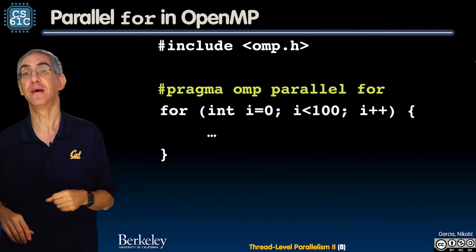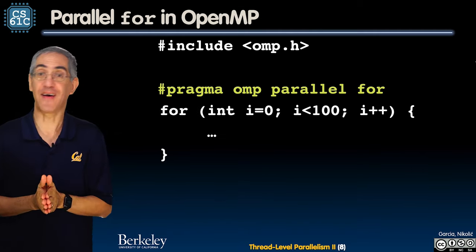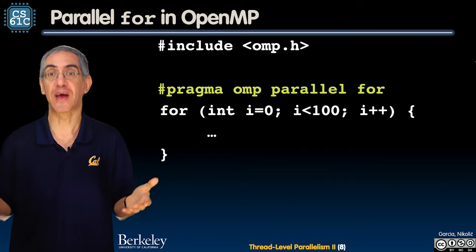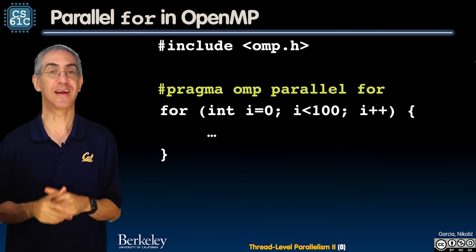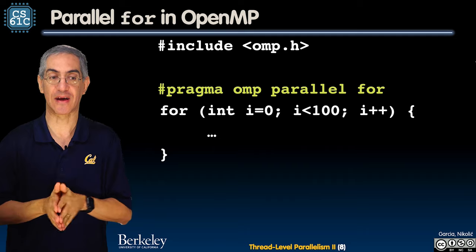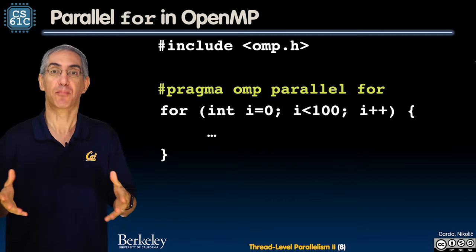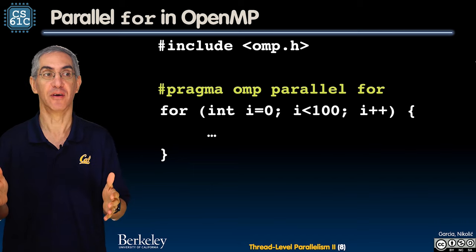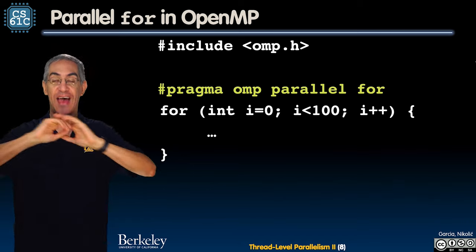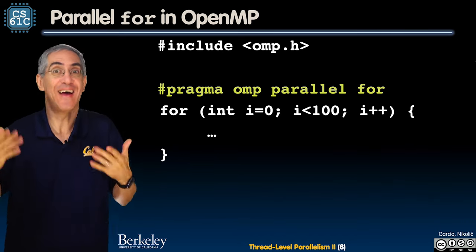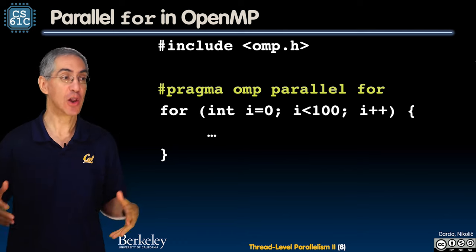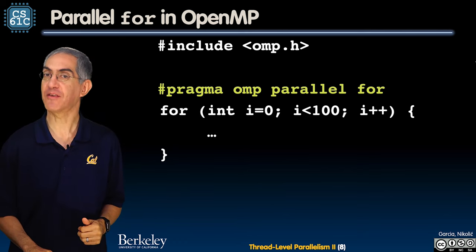How to do this in OpenMP? It's not that bad. First, include the header file omp.h, then just say pragma omp parallel for. That's all you do - that loop will be parallelized. That's amazing.